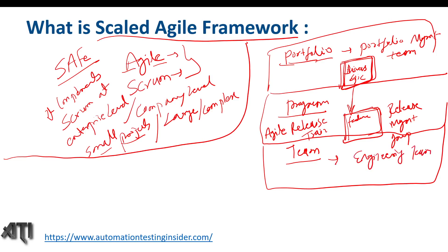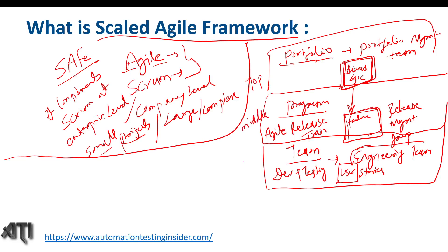The third level is Team. Here the engineering team works to convert features into user stories. A user story may contain one or multiple features based on the size of the requirement. The engineering team involves the dev team and testing team — the actual implementation is done by the engineering team. These are the three levels of the Scaled Agile Framework.